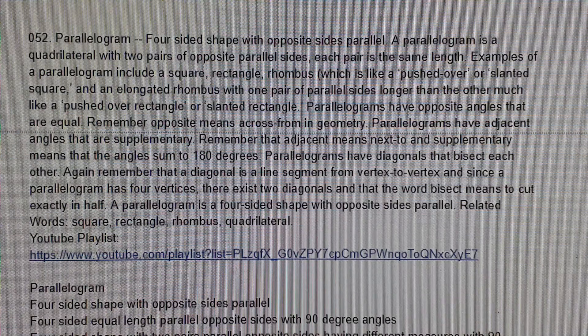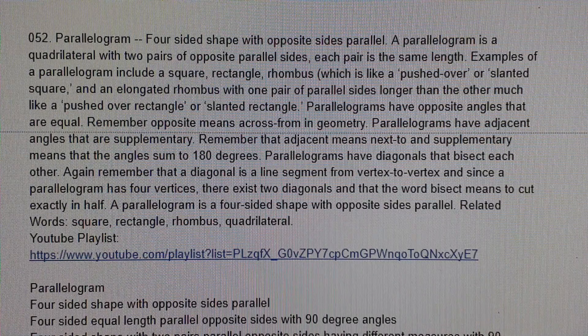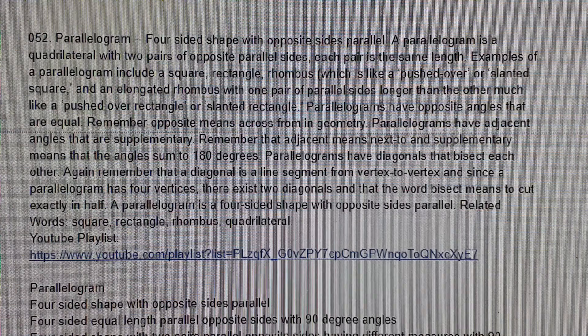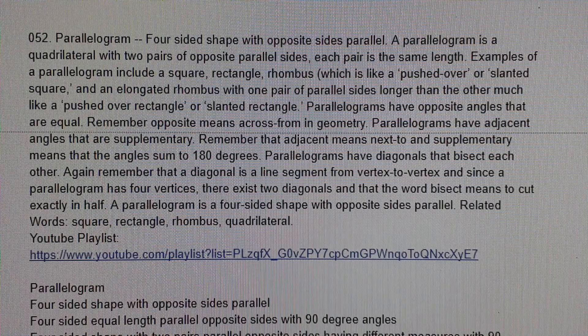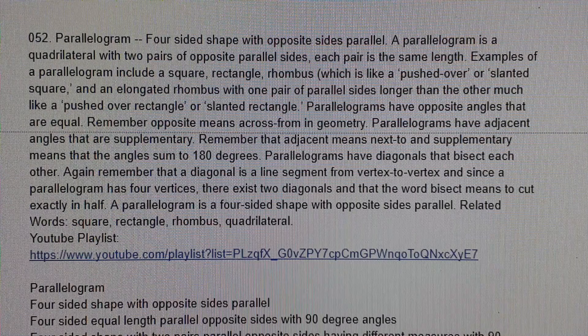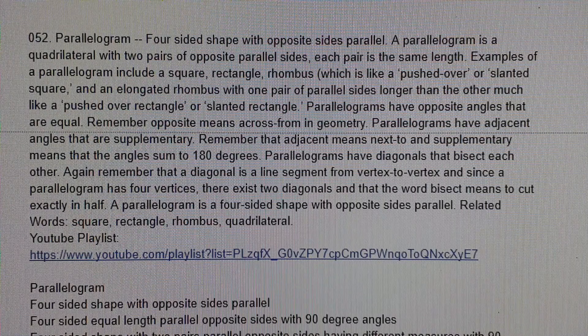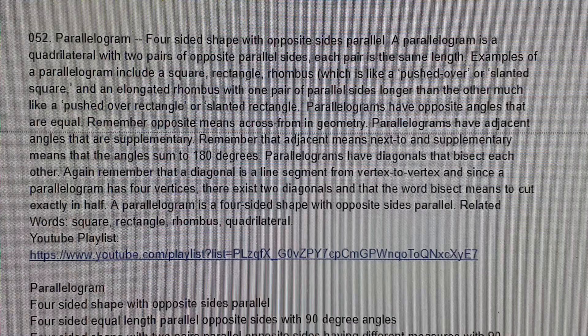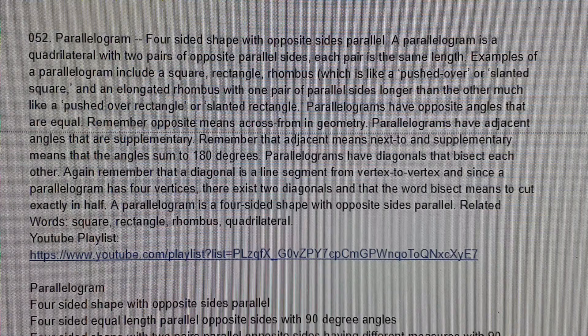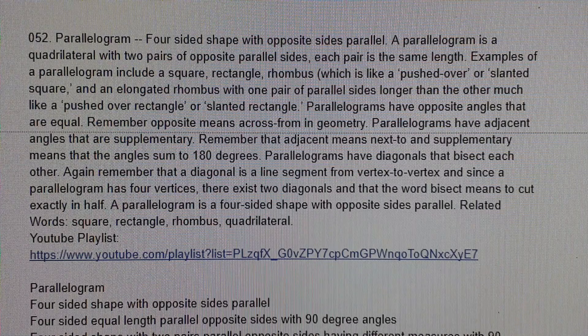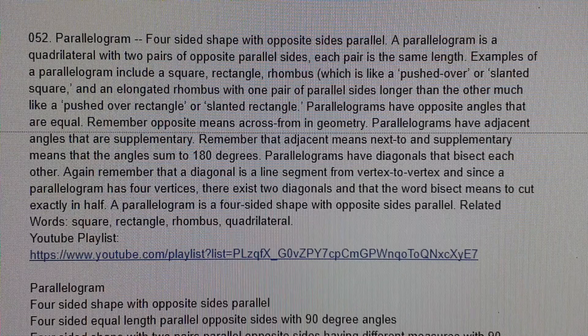Examples of a parallelogram include a square, rectangle, rhombus, which is a pushed over or slanted square, and an elongated rhombus with one pair of parallel sides longer than the other, much like a pushed over rectangle or slanted rectangle.